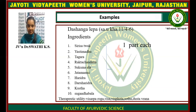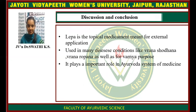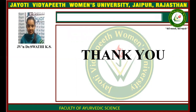Therapeutic indications: It is used in cases of Kshatrapa Roga, Visha, Sphotas, and Shotha. Coming to the discussion and conclusion, Lepa is a topical medicament meant for external application, used in many disease conditions like Vrana Shodhana and Vrana Ropana, as well as for Varnya purposes. It plays an important role in the Ayurvedic system of medicine. Thank you.